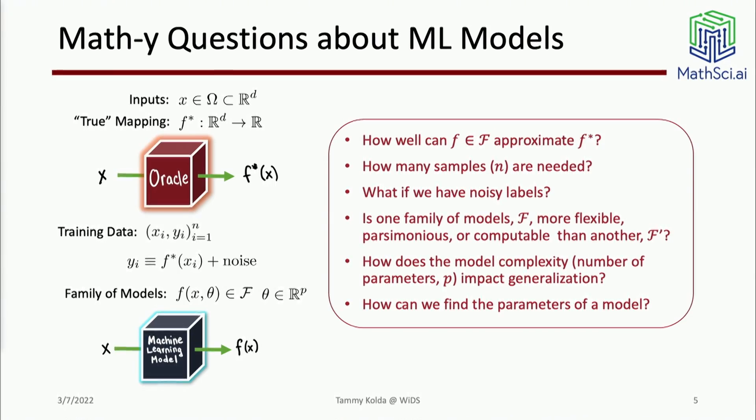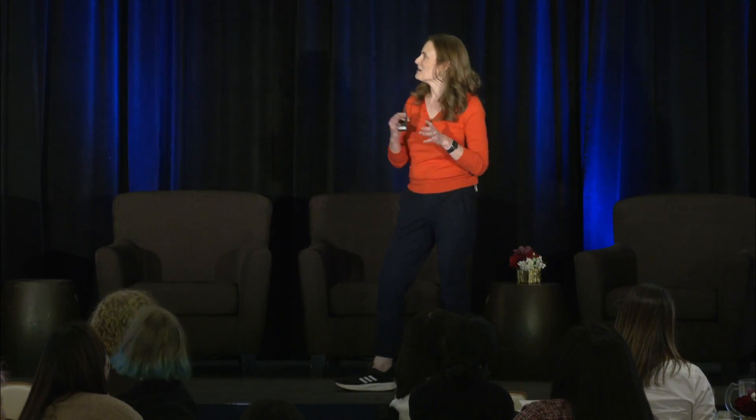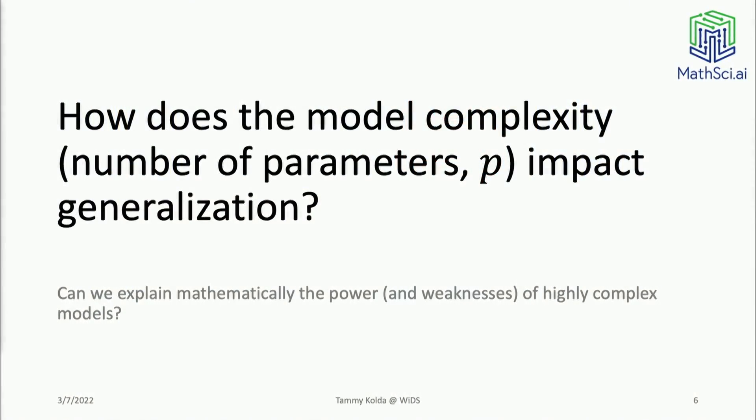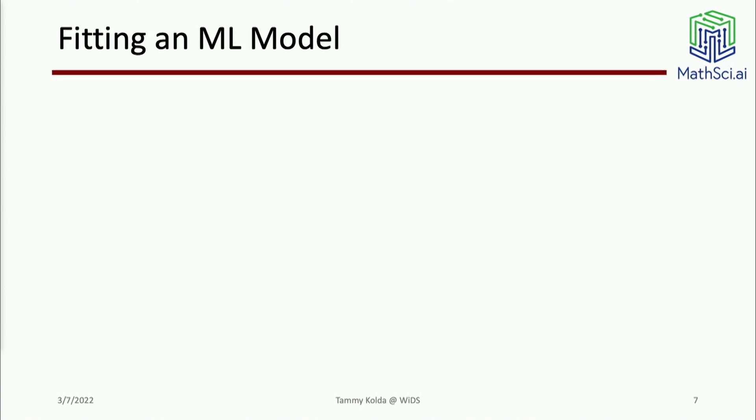How does model complexity impact generalization? You might think of this as the number of parameters of a model. How can we learn the parameters of a model? If I can write down any math model I want, but how can I learn that theta for that model? I could talk about all those topics, but then everybody would fall asleep because I can make a room go silent with my love of mathematics. So how does model complexity impact generalization, and can we explain mathematically the power of deep learning?